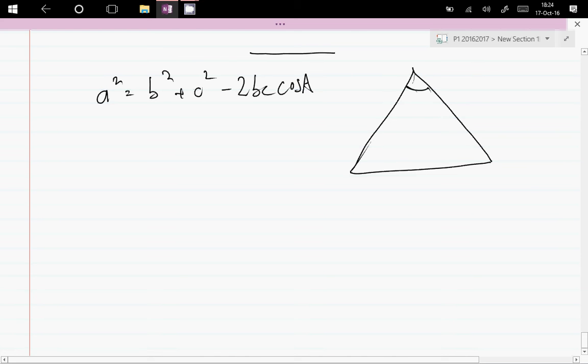The angles are in capital letters and the sides are in lowercase, so that would be a, b, c. So that's a, c, and b.